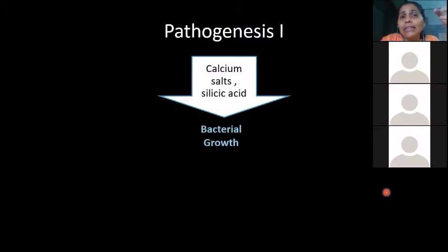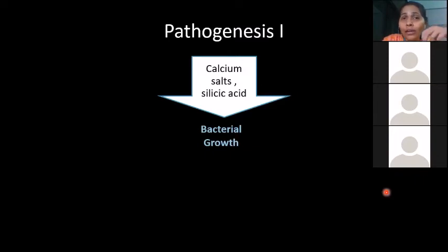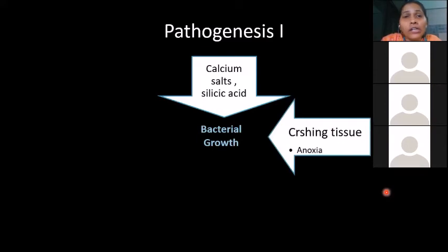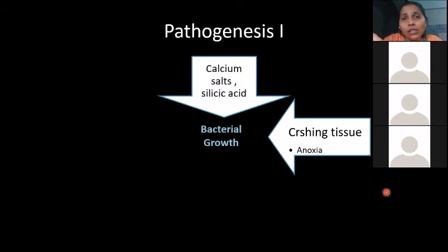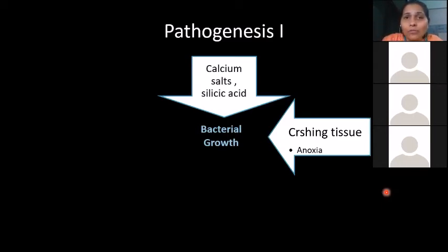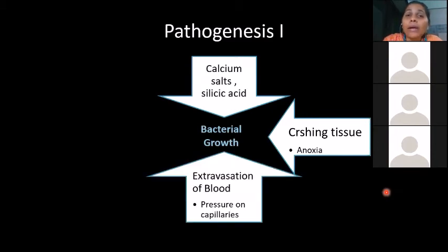The basic cause of infection is contamination of the wound by soil containing Clostridium spores — not the bacteria per se. Clostridium enters in spore form. Due to crushing of tissues, blood vessels are torn, creating local swelling and a perfect anaerobic, anoxic condition. The spores have nutrition and anaerobiosis, so they germinate into gram-positive bacilli — Clostridium.